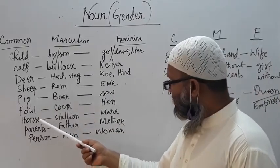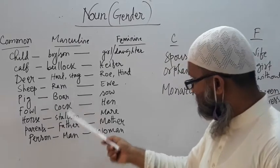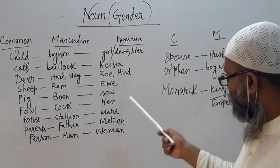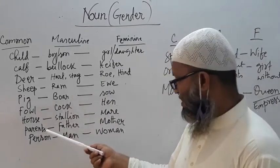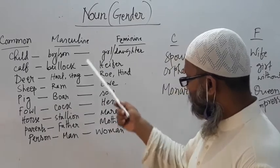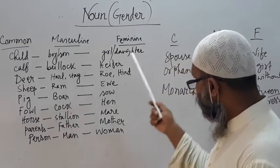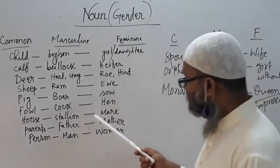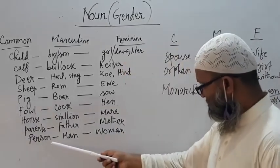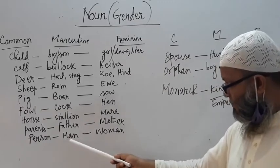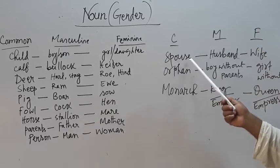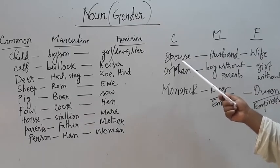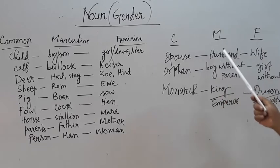And 'horse' is common gender, but its masculine is stallion and feminine is mare. And 'parents' — everybody has parents. Its masculine is father and feminine is mother. And the same way, 'spouse' is male and female — its male is husband and female is wife.